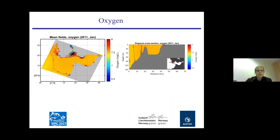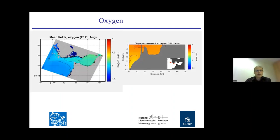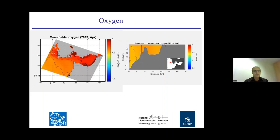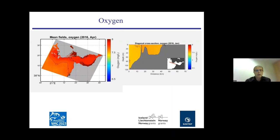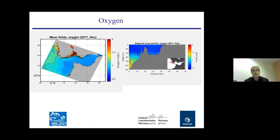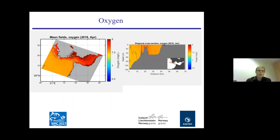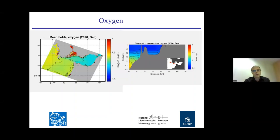For oxygen, the mean values are shown with limited range to reveal detail in the figures. There is a lot of variability in the lagoon area where it is really shallow, less variability out in the open ocean, and more variability into the Gulf of Patras and towards the Bay of Corinth.